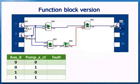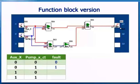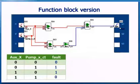Here is the function block version. We can step through its function and prove that the truth table is correct. There are no internal relays — that function is performed by the interconnections between the function blocks. Both inputs off: fault indicator off. Auxiliary X off and PUMPXCT on: fault indicator on. Auxiliary X on and PUMPXCT off: fault indicator on. Both inputs on: fault indicator off. The truth table is the same, so the program works.